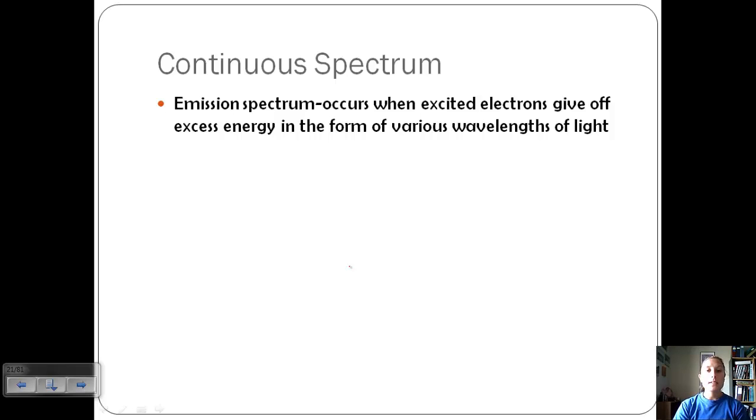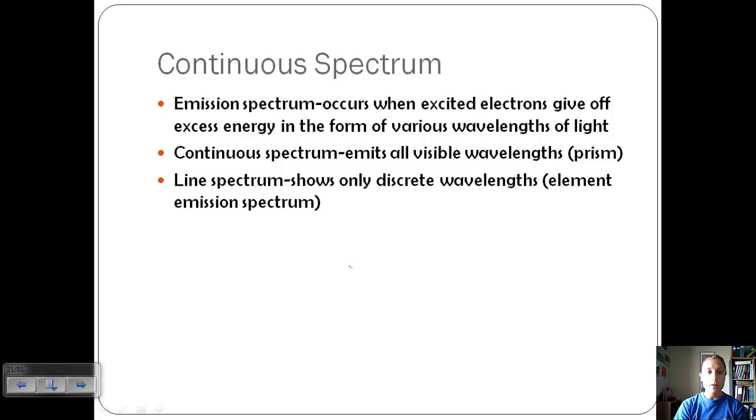Emission spectrum occurs when excited electrons give off their excess energy in the form of different colors of light based on the wavelength. Continuous spectrum is where all visible wavelengths are emitted. So a rainbow, light through a prism, anything like that. Sunlight in general when you look at it with a spectroscope.